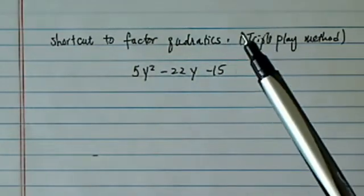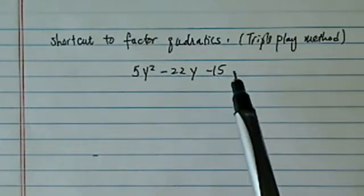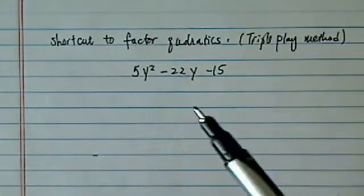When we factor quadratics, we're looking for two numbers. When you multiply, you get the constant. When you add, you get the cross term.